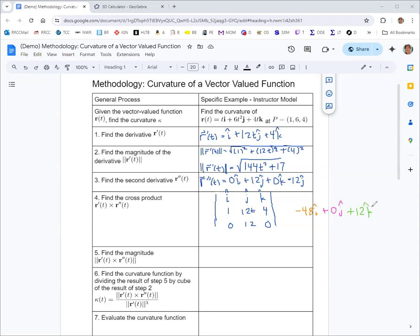For the k component, 1 times 12 is 12, minus 0 times 12t is just 12. So the cross product of r prime and r double prime is -48i + 12k.